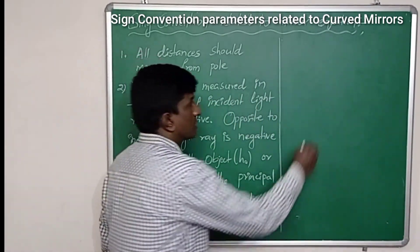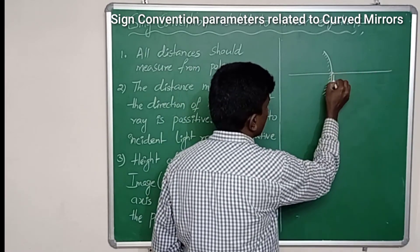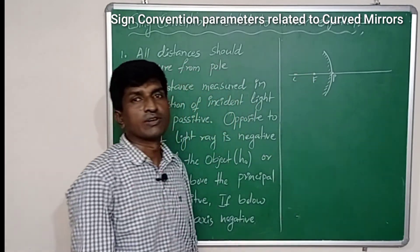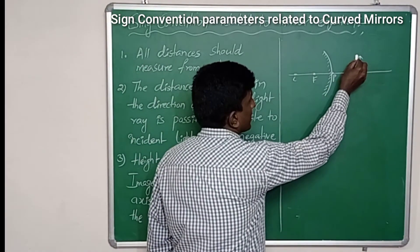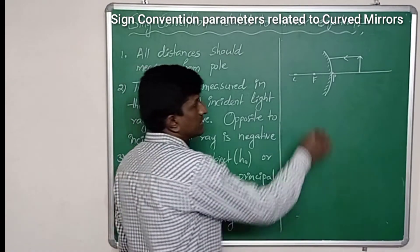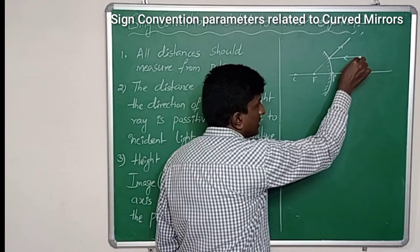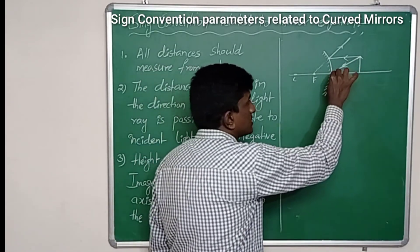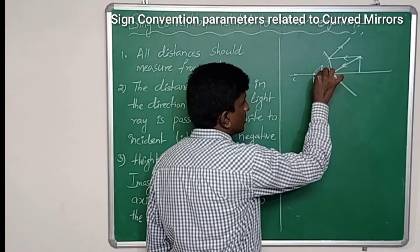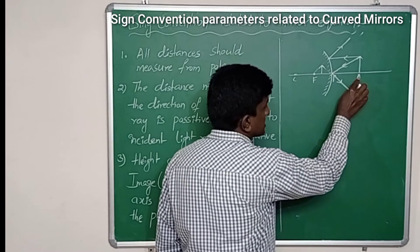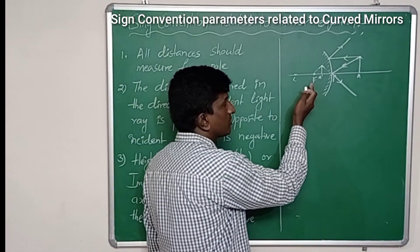Now let us write the sign conventions for the convex mirror. For a convex mirror, a parallel light ray incident on the mirror gets reflected such that it appears to be coming from the focal point. One more light ray incident at the pole gets reflected at the same angle. These two reflected rays appear to intersect behind the mirror, and the image is formed there. This is the distance of object PA and the distance of image PA'.